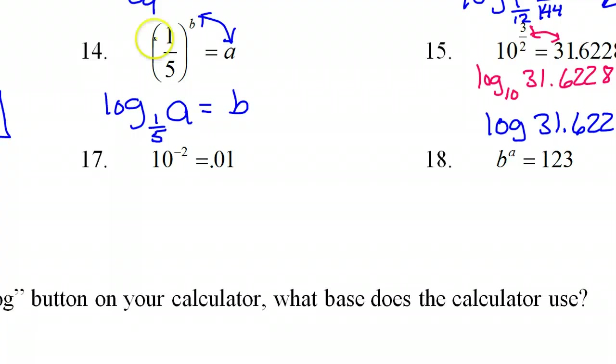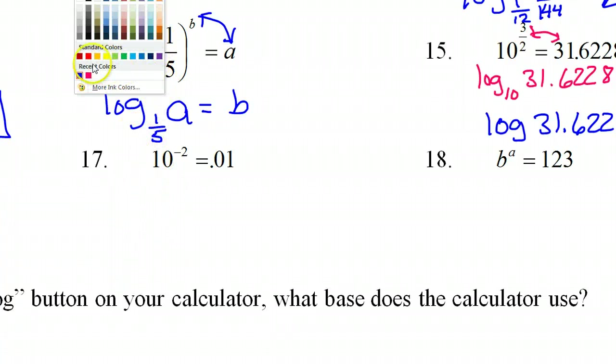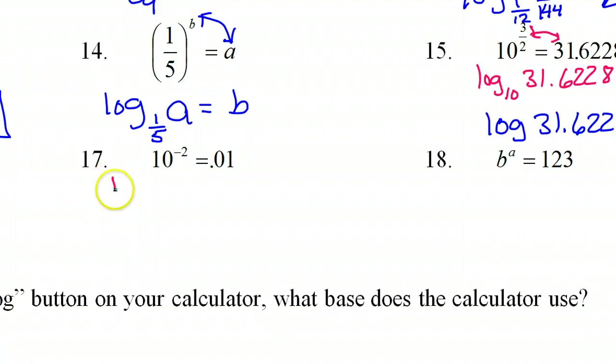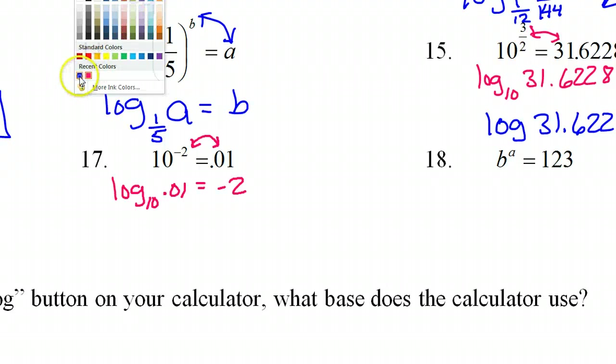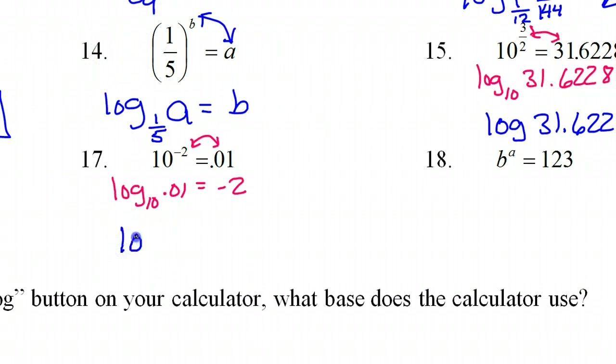Number 17. So here again, I see this base 10 coming on. So normally we would write log base 10 and then we'd switch these. So that would be .01 is equal to negative 2. But we don't write log base 10. The base 10 is understood. So we just write log .01 is equal to negative 2.